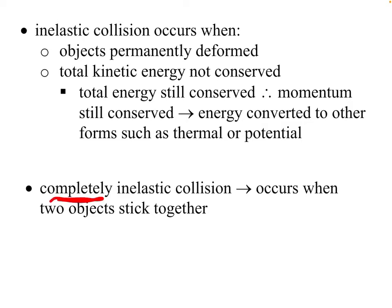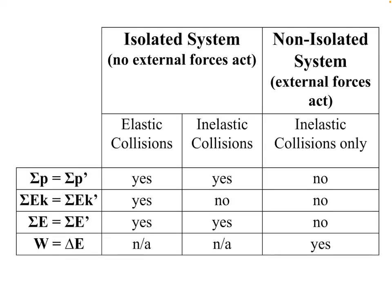Total energy is conserved because energy is converted to thermal energy and other forms. A completely inelastic collision is when two objects stick together — like two lumps of putty colliding, or two cars that crash and get stuck. That's a completely inelastic collision because as much energy as possible has been transferred to heat.